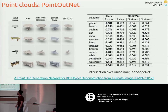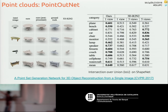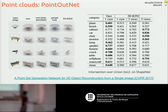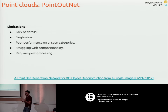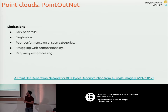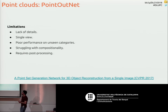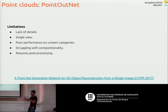Comparing results to the previous voxelization method, the point cloud approach better preserves structure, which is confirmed by metrics showing it outperforms the previous method. Limitations include: still lacking fine detail, it's designed for single view (though extendable), poor performance on unseen categories — if trained only on planes it won't handle tables well — and struggles with compositionality, e.g., two chairs when trained on one. Post-processing is also required.